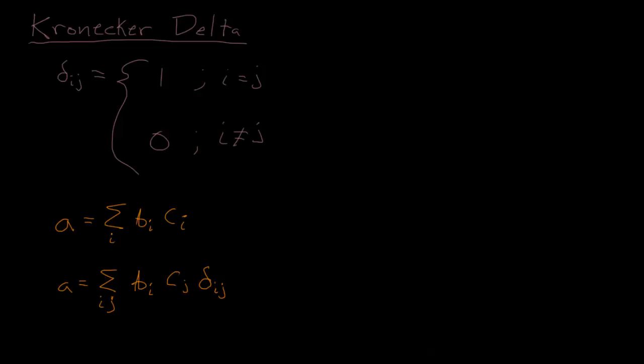And like I said, this isn't a terribly compelling example because we found a simpler way to write the same thing, but just to show you how it works. So let's find all of these, let's just step through the indices. So let's see, I won't define what b and c are, but we'll see that, so first let's start with i and j both equal one.